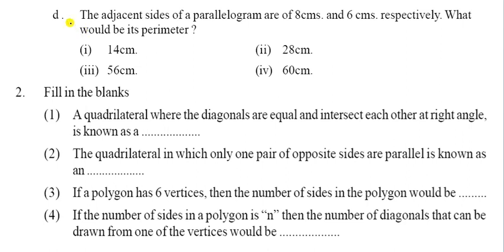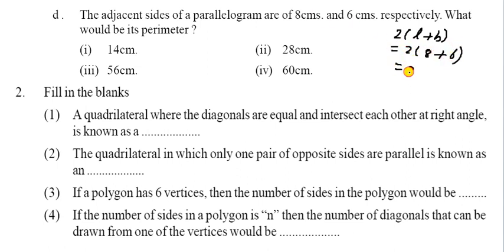Part D: if the adjacent sides of a parallelogram are 8 and 6 centimeters respectively, what would be its perimeter? The perimeter is 2(L + B) = 2(8 + 6) = 2 × 14 = 28 centimeters. That is the correct answer.